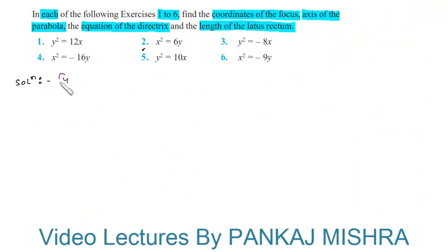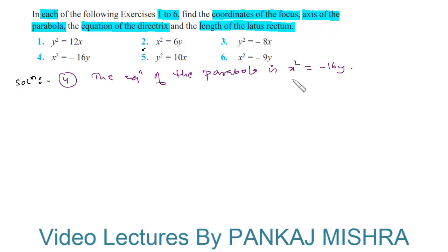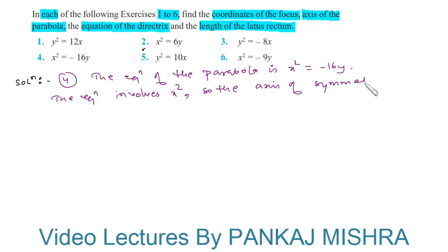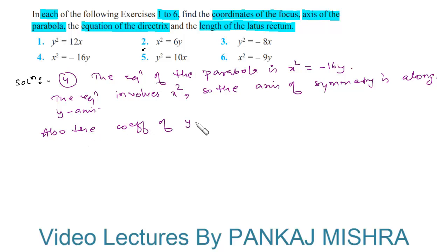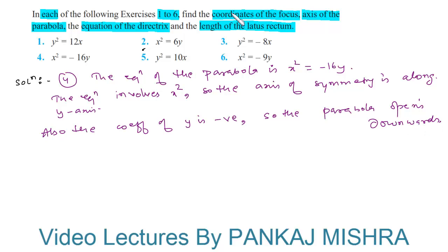In the fourth question, the equation of the parabola is x² = −16y. Since the equation involves x², the axis of symmetry is along the y-axis. Also, the coefficient of y is negative, so the parabola opens downwards.